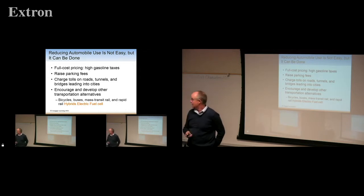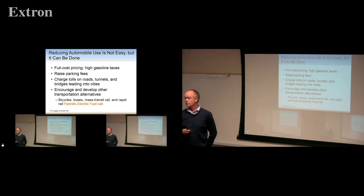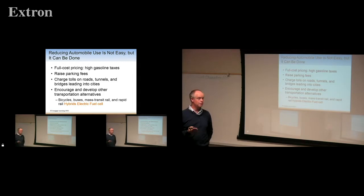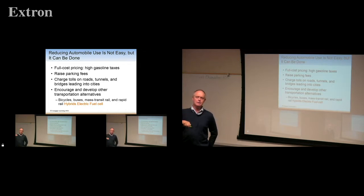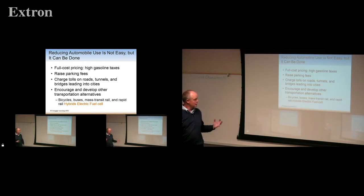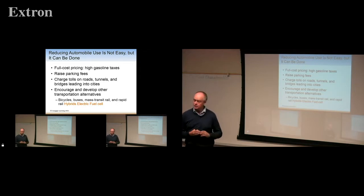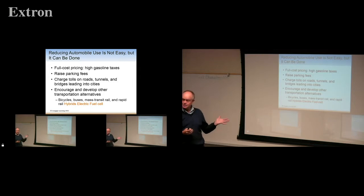Full-price pricing and high gasoline taxes are happening in California — gasoline prices went up recently because of new taxes specifically for infrastructure to build more freeways. We should also reduce automobile use and encourage transportation alternatives: hybrids, electric, fuel cell, buses, bicycles, mass transit, and rapid rail. If you can walk to work faster than driving — like my architect friend downtown LA — these things start to make sense.